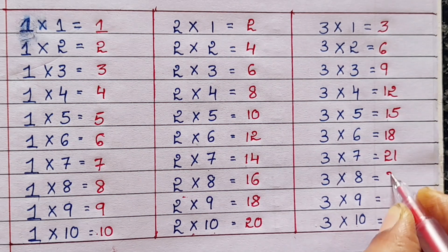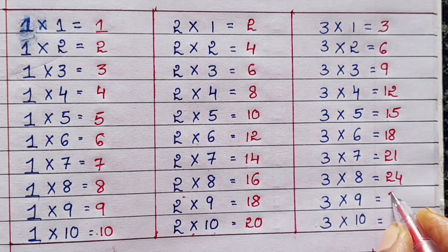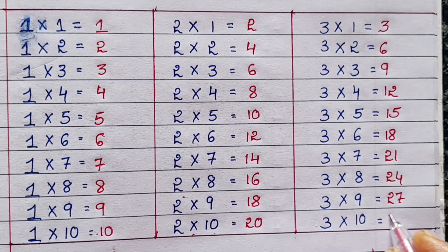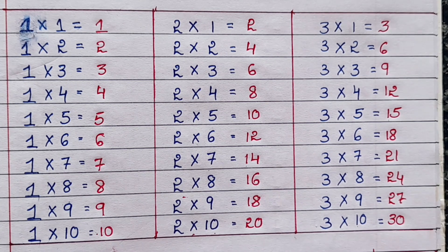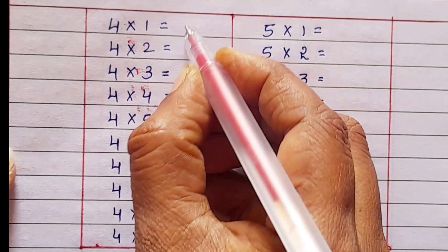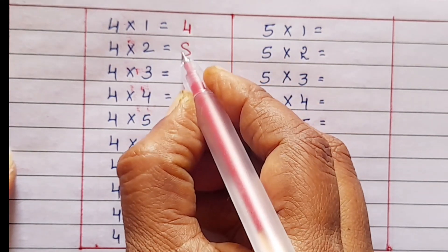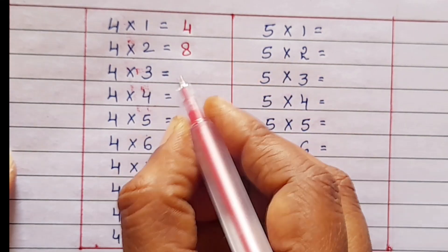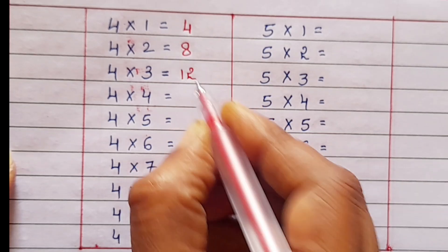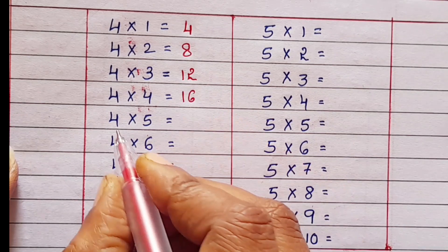3 8s 24, 3 9s 27, 3 10s 30. 4 1s 4, 4 2s 8, 4 3s 12, 4 4s 16,